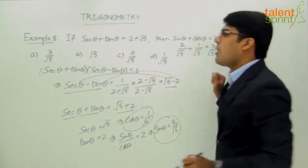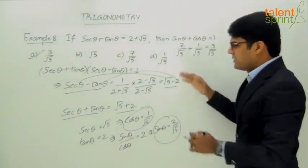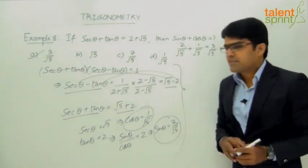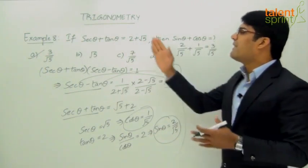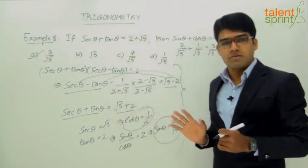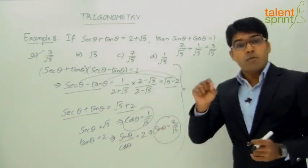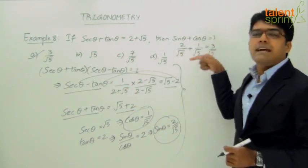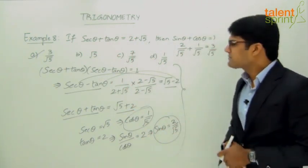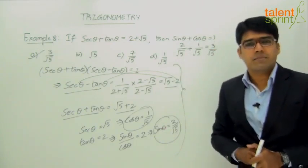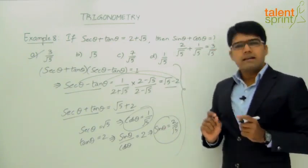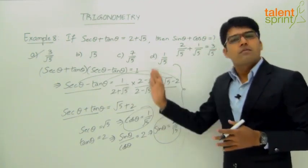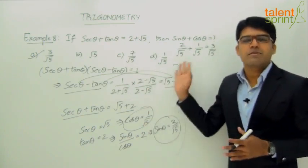So our answer is option A: 3 by root 5. You can cut down a few steps here — you need not write all these steps to get the final answer. The key point is that since we cannot get the value of theta directly, we use the regular method, working on sin theta and cos theta directly rather than finding the angle theta itself.